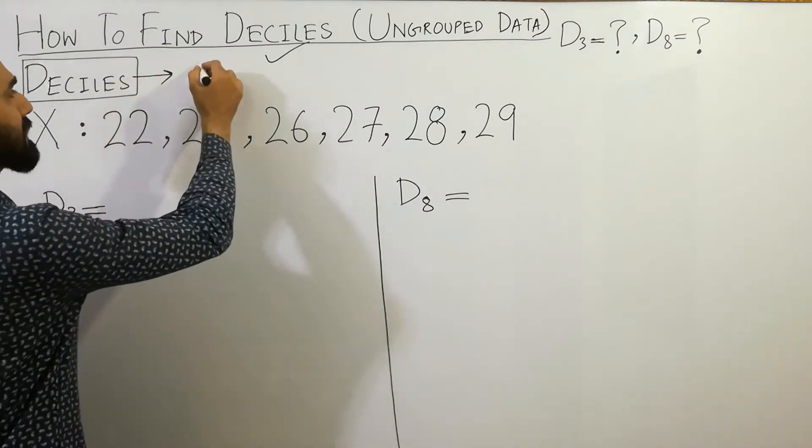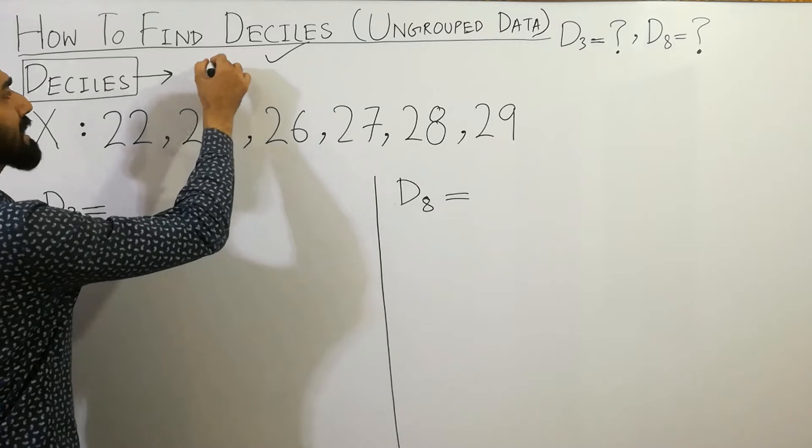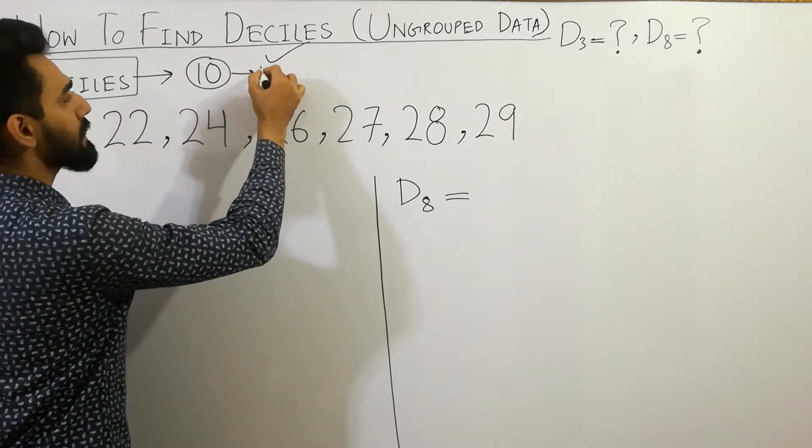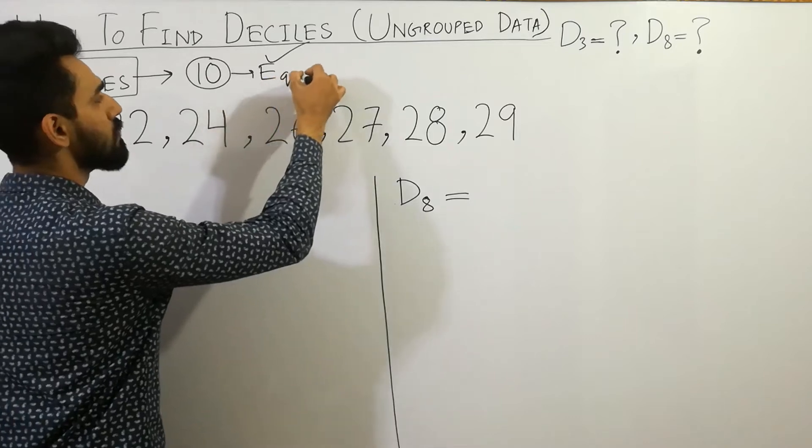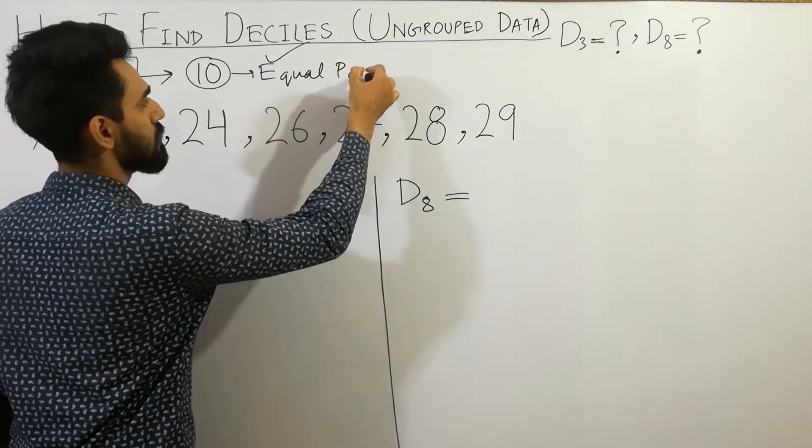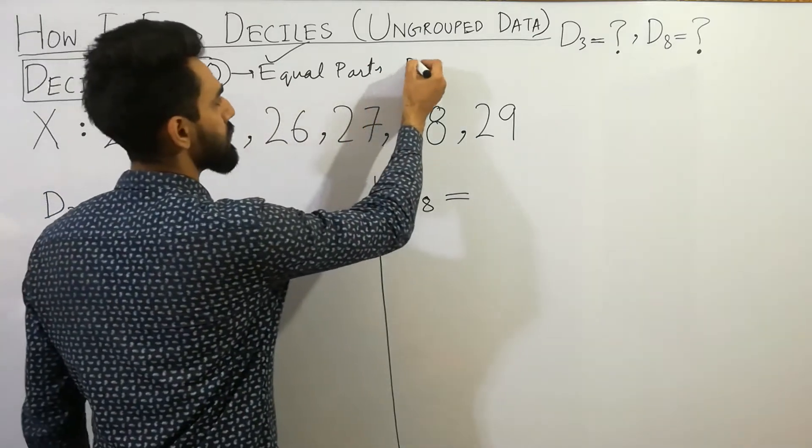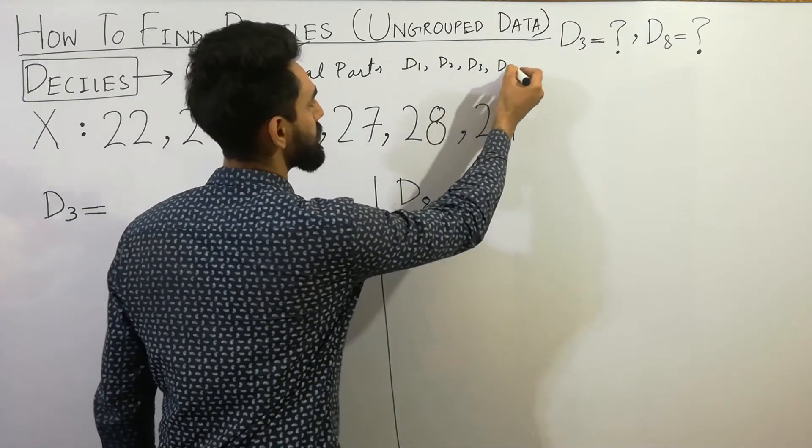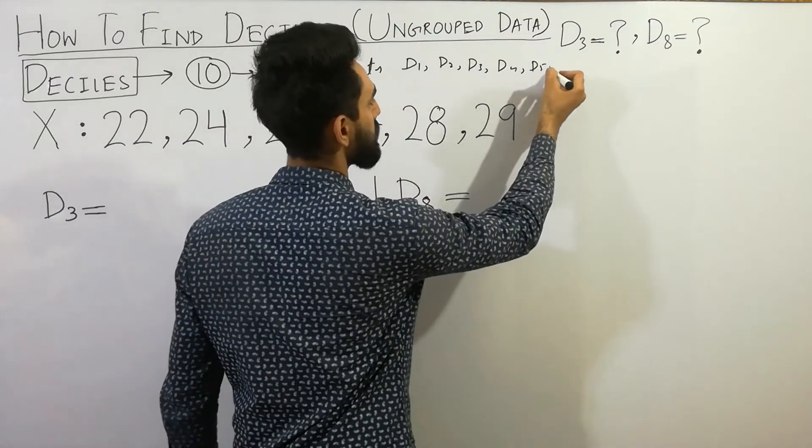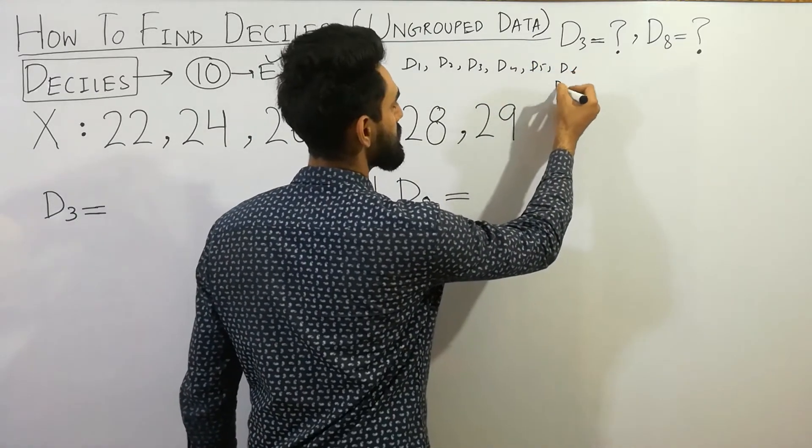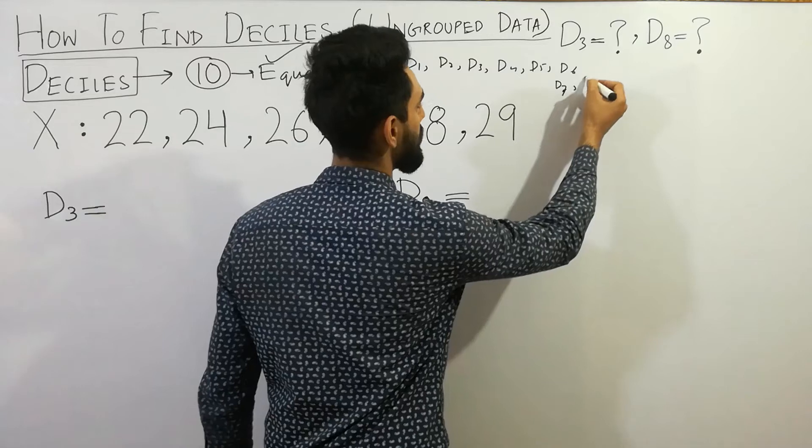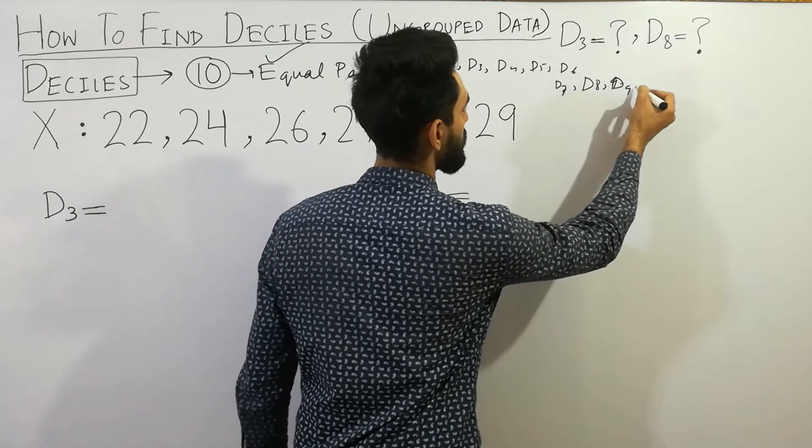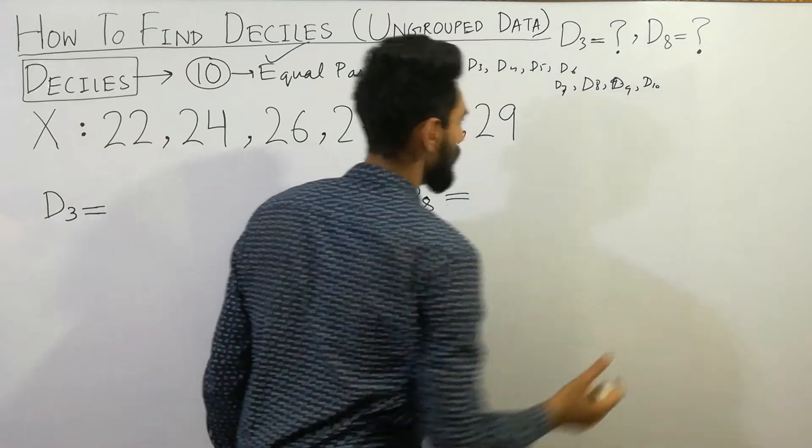It divides into ten equal parts. You can write here d1, d2, d3, d4, d5, d6, d7, d8, d9, and last step will be d10. These are the deciles from one to ten, these are ten.